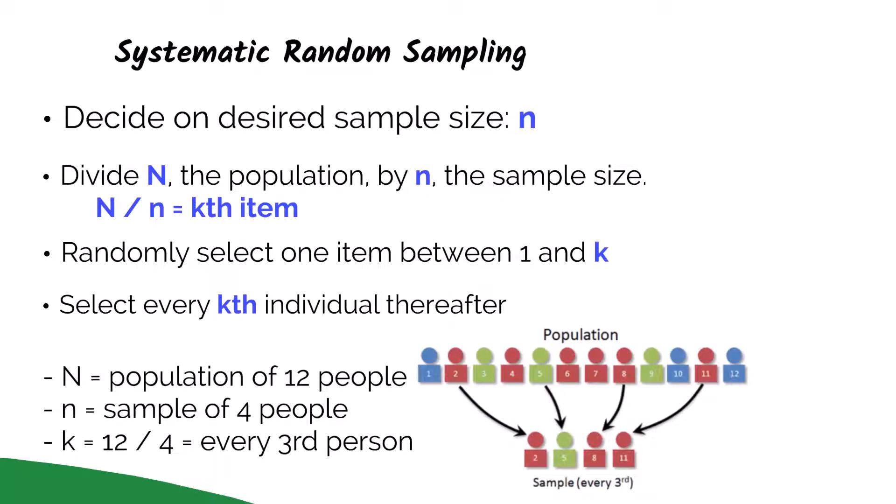Let's say we have a population of twelve people, and we want a sample size of four. We take our big N of twelve people, divided by our little n of four people, so that will tell us our k item is every third person. Next, I'm going to randomly pick where to start, and let's say we randomly pick between one and k, and it happens to be number two or the second person.